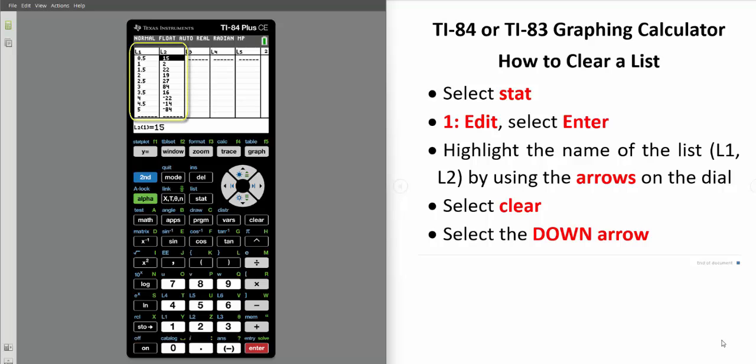So notice that I have data in column 1 and column 2. Column 1 is called List 1 and is displayed as L1. Column 2 is called List 2 and is displayed as L2.